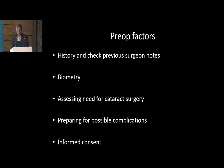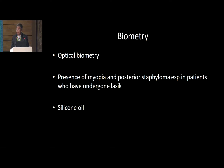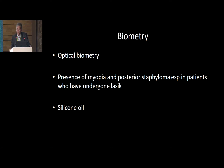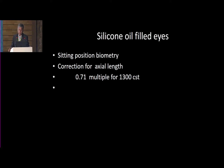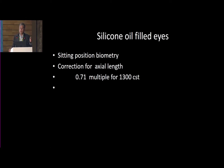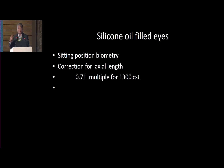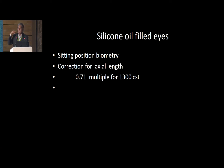You have to prepare the patient and relatives for possible complications and take very good informed consent, because this is not like your routine cataract surgery. Optical biometry is always preferable. You can have a presence of myopia and posterior staphyloma, especially in patients who have undergone LASIK, and you need to factor in LASIK calculations. In patients with silicone oil, biometry is extremely confusing. You can do a correction for axial length in the sitting position, but it's very difficult to get an exact axial length with silicone oil. My preference is: once I put the oil, I send the patient for biometry about a month later when the cataract is still clear, get a reading, and then whenever the cataract surgery is planned, do a repeat biometry and use the first reading to judge which lens to implant.